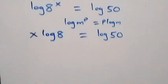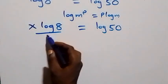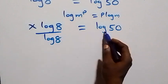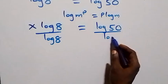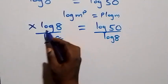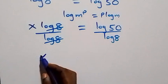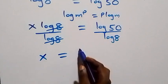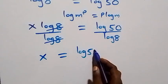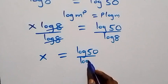The next step, we divide both sides by log 8. Divide this side by log 8, also divide this side by log 8. Log 8 cancels each other here, and we are left with x which equals to log 50 over log 8.